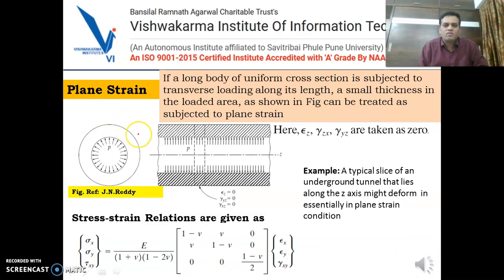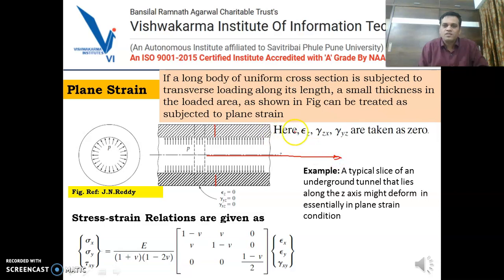Another type of problem is plane strain. You can consider the example of a long pipe or long cylinder where the uniform cross section is subjected to transverse loading along its length, with a small thickness in the loaded area. All strain components in the z direction — meaning deformation in the z direction — are very negligible or set to zero: epsilon_z, and shear strain components in the zx and yz planes are taken as zero. A typical example is a slice of an underground tunnel that lies along the z axis, which might deform essentially in the plane strain condition.